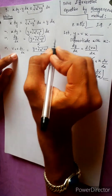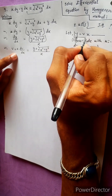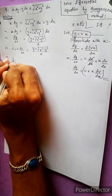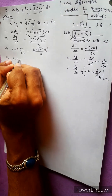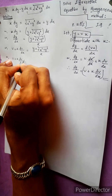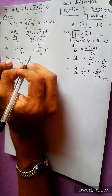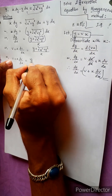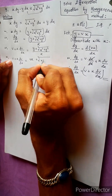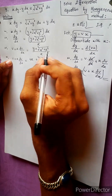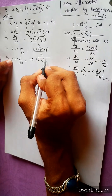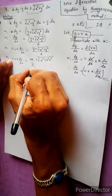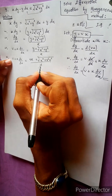This is y equals to vx, so we substitute. x db by dx equals to y. dx equals to x squared plus bx — x squared divided by x.